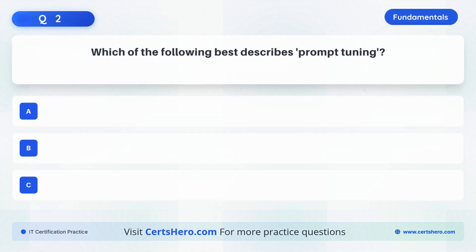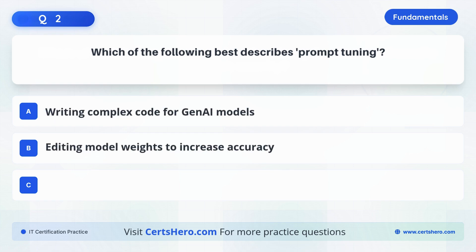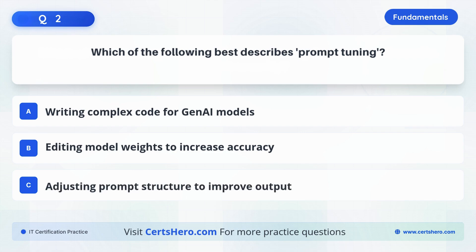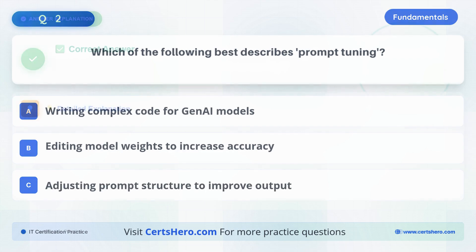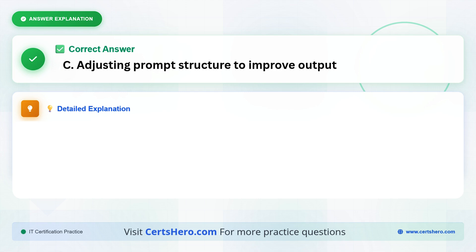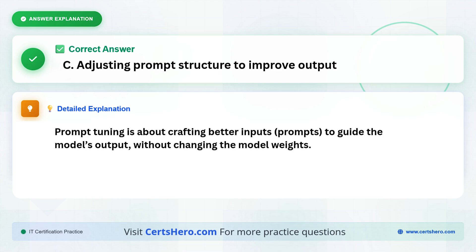Which of the following best describes prompt tuning? A. Writing complex code for GenAI models. B. Editing model weights to increase accuracy. Or C. Adjusting prompt structure to improve output. It's C. Prompt tuning is simply the act of refining your input prompt to guide the model's output. You don't change the model, just the way you ask. It's a lightweight but powerful method.